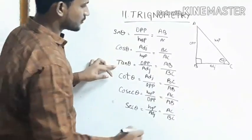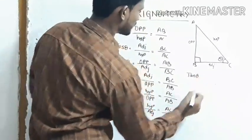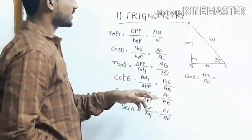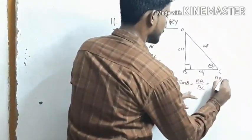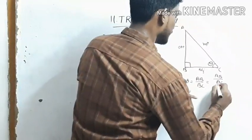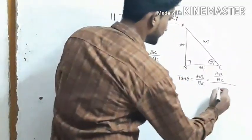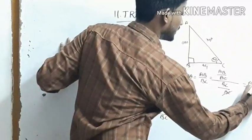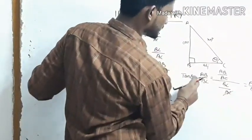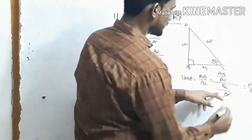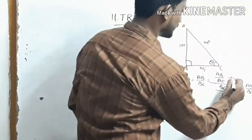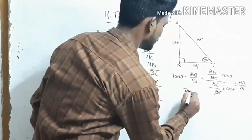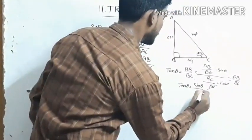Tan theta equals to AB by BC. This can also be written as: AB by AC divided by BC by AC, with AC cancelling, giving AB by BC. So AB by AC equals sin theta and BC by AC equals cos theta. Therefore, tan theta equals sin theta by cos theta.